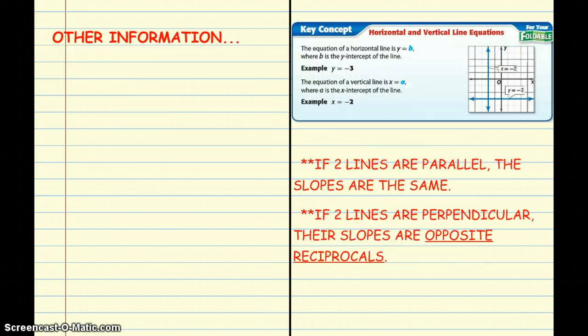All right. Last example. A couple pieces of information. First of all, talking about horizontal and vertical lines. When you talk about horizontal lines, those are the ones that go side to side. The equation is always going to be y equals some sort of constant. And, then vertical lines are just the opposite. They will equal x equals some sort of constant.